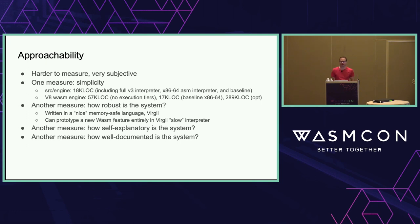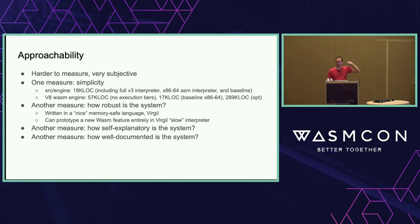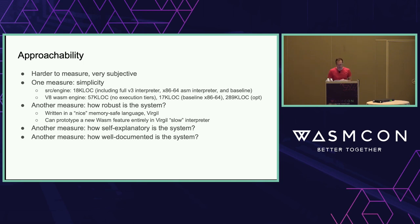Another priority is approachability. Wizard is 18,000 lines of code — including the interpreter, the baseline compiler, and assembly code to make the interpreter fast — covering all parsing, type checking, and everything. For context, the V8 Wasm engine with no execution tiers is 57,000 lines. Once you add execution tiers, the baseline compiler alone for one architecture is 17,000 lines, and the optimized compiler is 289,000 lines. Students simply don't have enough time to read that amount of code. Being smaller and simpler makes it more approachable.